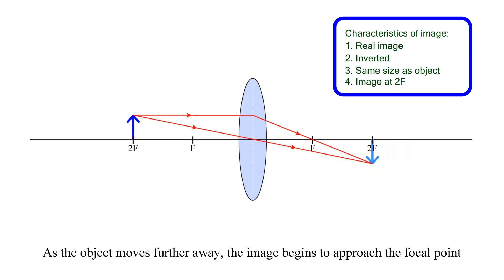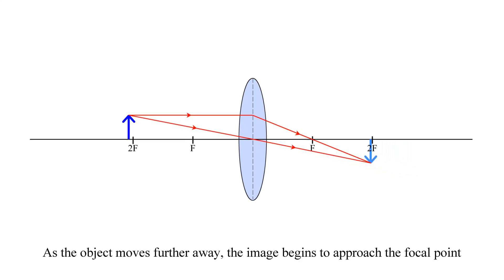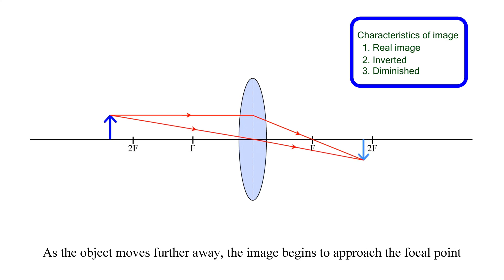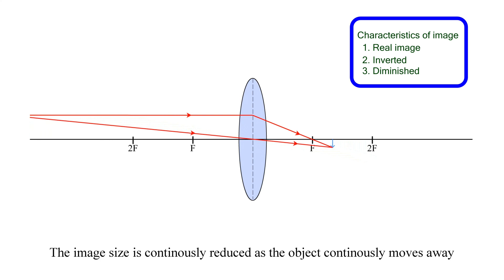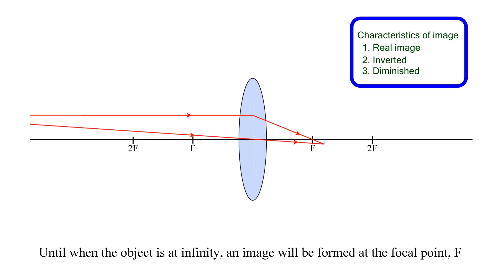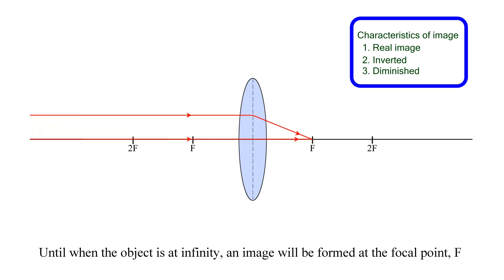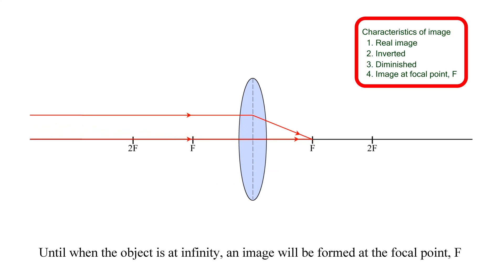As the object moves further away, the image begins to approach the focal point. The image size is continuously reduced as the object continuously moves away, until when the object is at infinity, an image will be formed at the focal point, F.